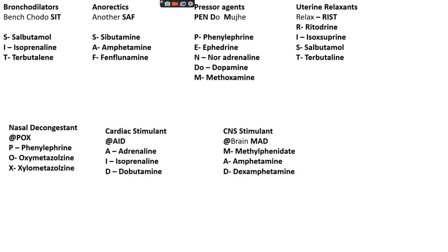To remember cardiac stimulants, we use the mnemonic 'AID': A for Adrenaline, I for Isoprenaline, D for Dobutamine.